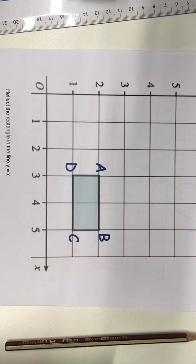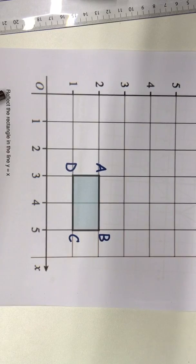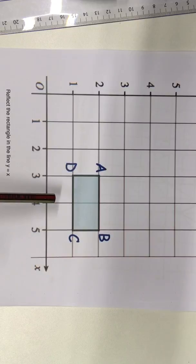Okay, in this video I'm going to show you how to reflect across a diagonal mirror line. The question asks you to reflect the rectangle ABCD in the line Y equals X.